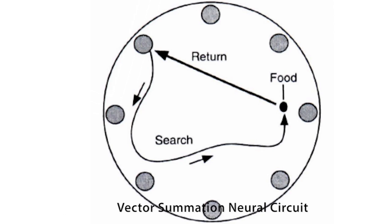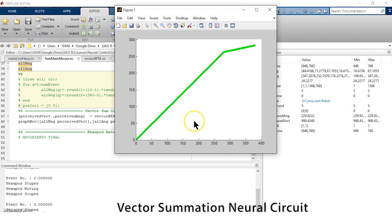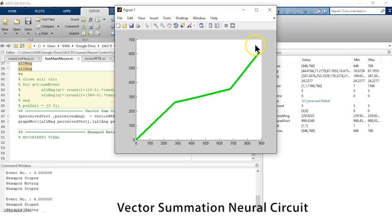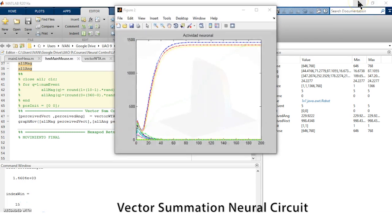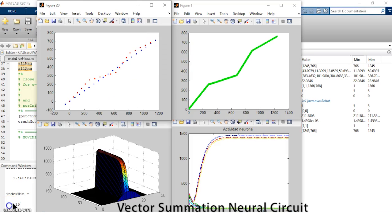We also created a neural circuit which allowed the hexapod to return to its home position when it encountered a predator agent. This circuit was constituted by a circular array of neurons, which based on the individual distance and relative angle that the robot made in each trajectory, computed the resulting angle to which the robot had to return in order to go back to its origin point. This neural circuit performed in this way a biological-inspired vector summation operation.